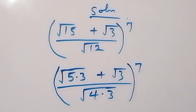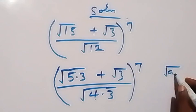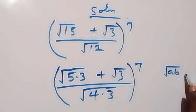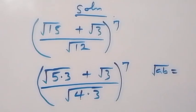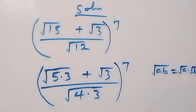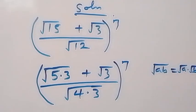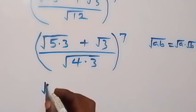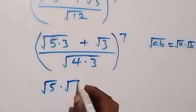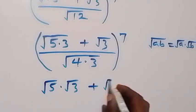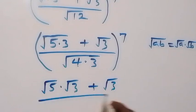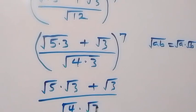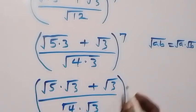We use the rule that root(a × b) can be written as root(a) times root(b). So we separate root 15 as root 5 times root 3, and root 12 as root 4 times root 3. The expression becomes (root 5 times root 3 plus root 3) over (root 4 times root 3), all raised to power 7.